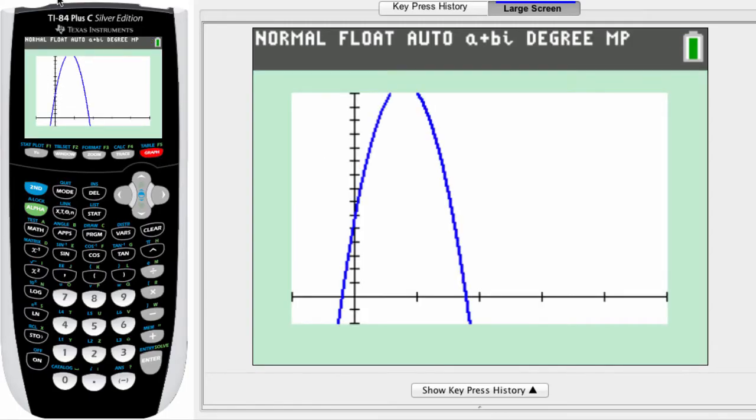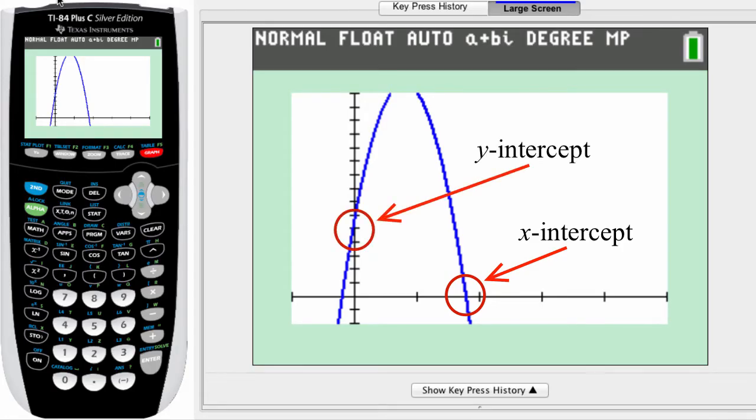Okay, down along the x-axis is the x-intercept and along the y-axis is the y-intercept. Here's how we find those exact values.